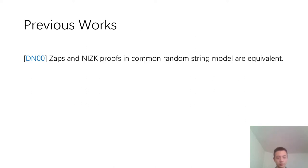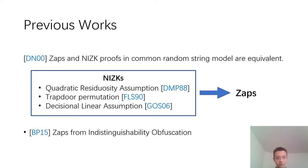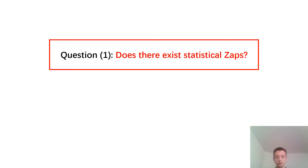In the work of Dwork and Naor, they show that ZAPs and NIZK proofs in the common random string model are equivalent. Combining this with NIZK constructions from Quadratic Residuosity, Trapdoor Permutation, and Decisional Linear assumptions, we get ZAP constructions from these assumptions. Also, in the recent work of VP15, ZAPs are constructed from indistinguishability obfuscation. However, all of the above works give computational ZAP proofs. So our first question is: does there exist statistical ZAPs?